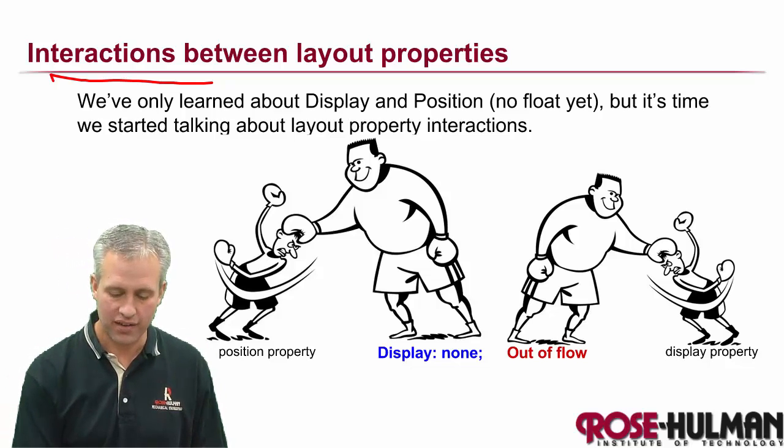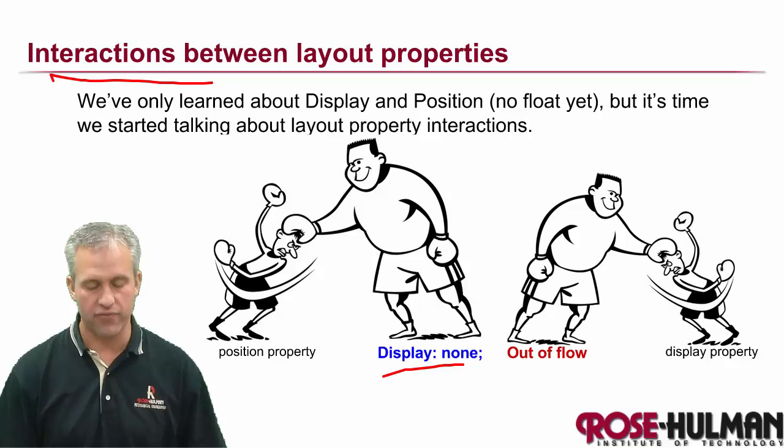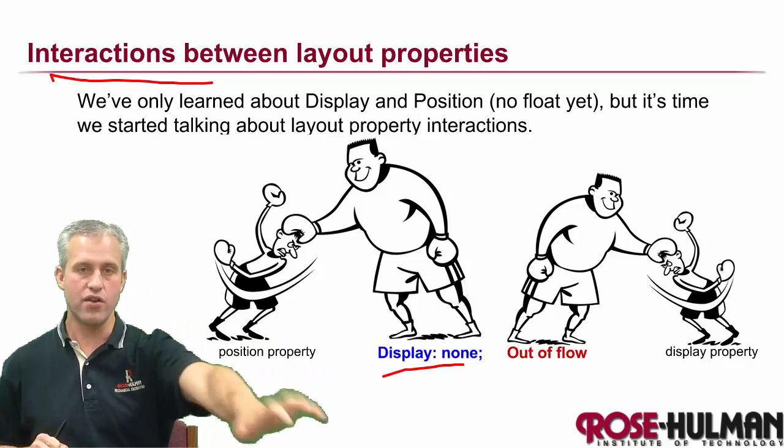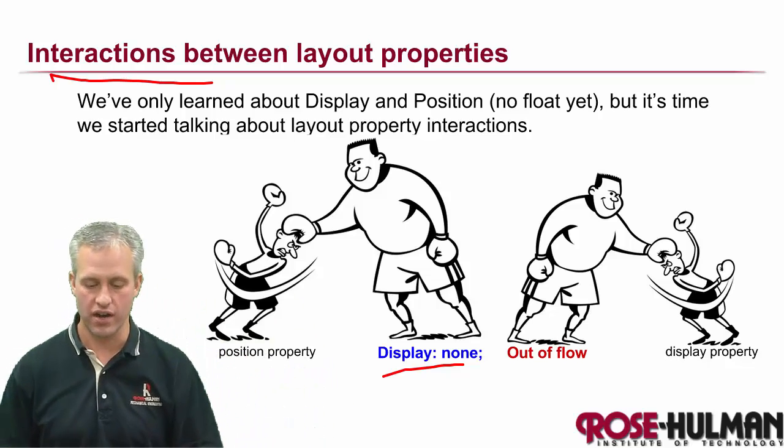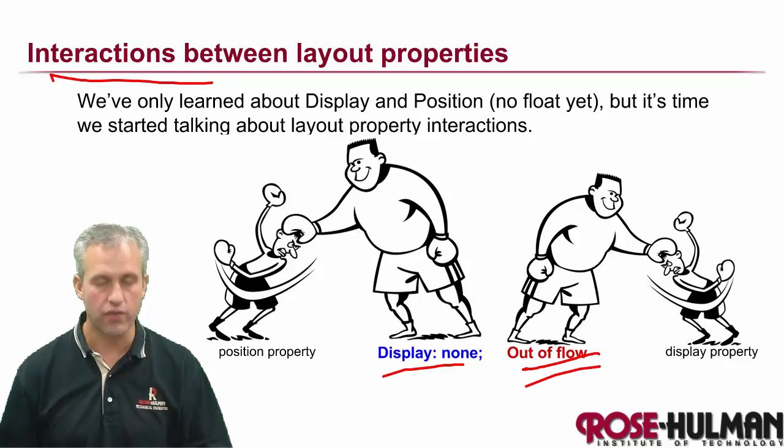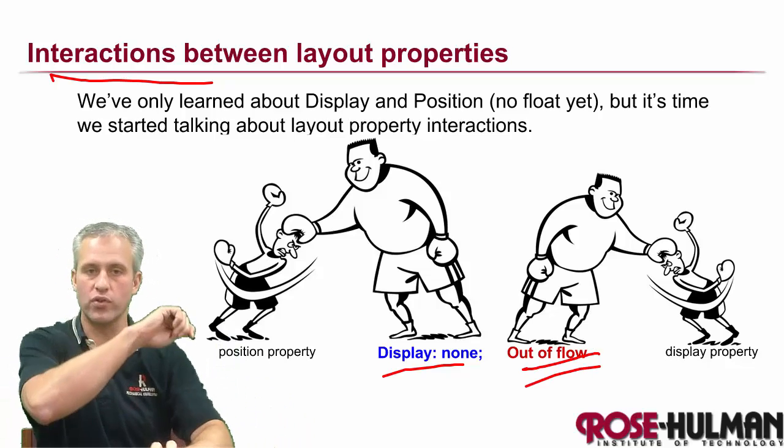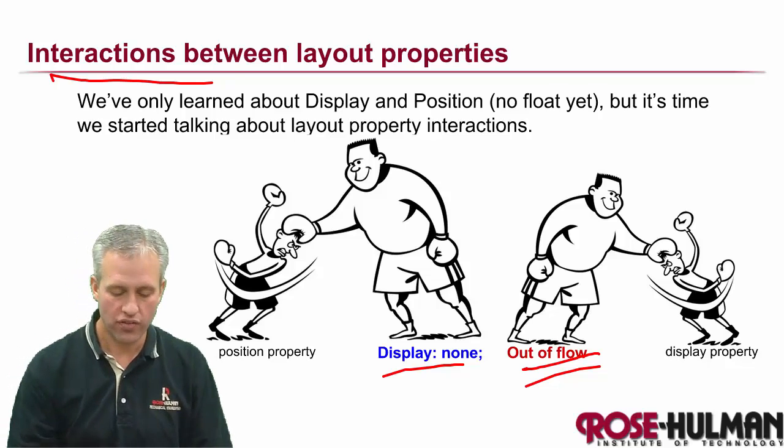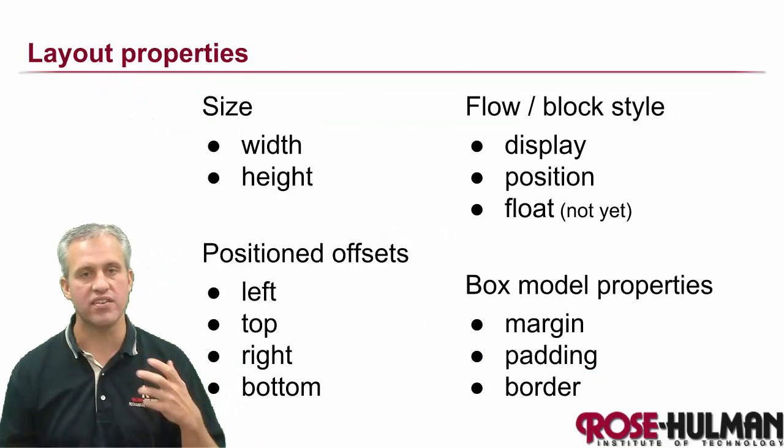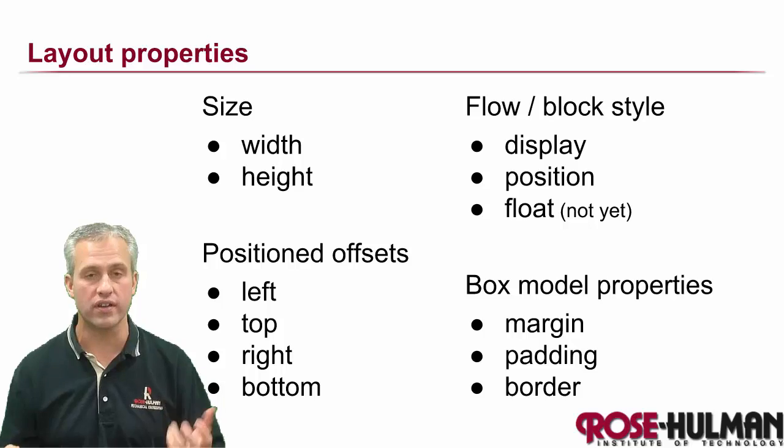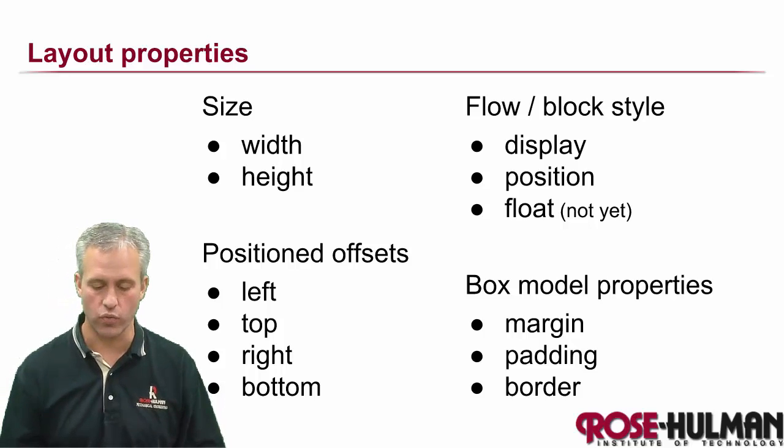So there's some things, like I kind of like my model here, where if there's a display none, I don't care about what position says, right? Or if they're out of the flow, I don't care what display was, unless of course it was display none. And there's all these interactions and it's really neat to see how these properties work together so that you can actually get what you want.